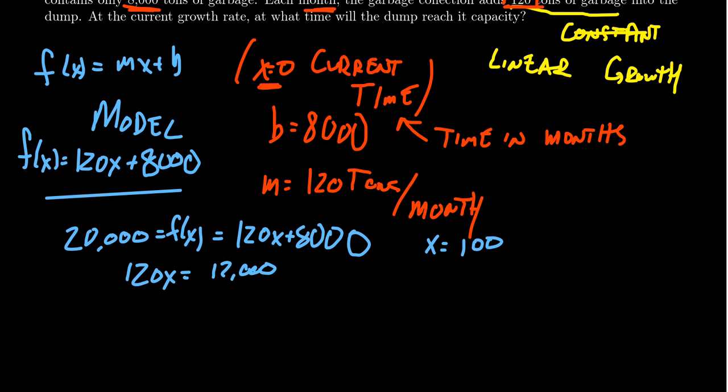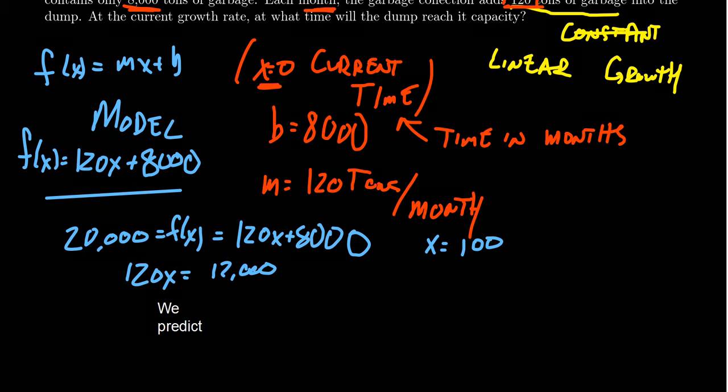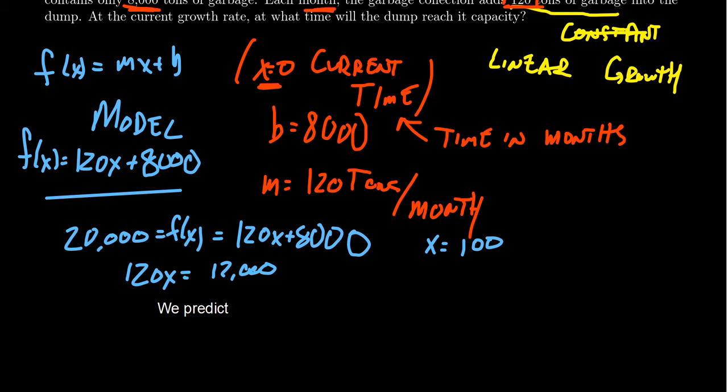So we predict that in approximately eight years, four months, which be aware that's 100 months. If you divide 100 by 12, you're going to get eight remainder four. So in approximately eight years and four months,